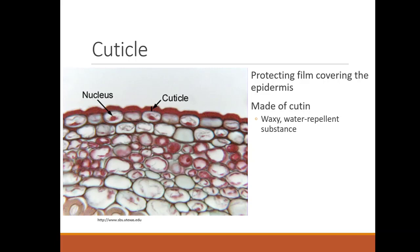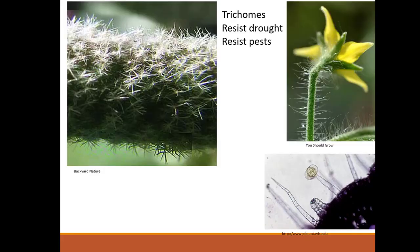The cuticle is on the outside of a stem — it's a protective film covering the epidermis. Leaves have this as well. It's made of cutin, and it's waxy and water repellent. Some things you might see on the outside of a stem are trichomes, which are hairs that can be very uncomfortable to touch. These help resist drought and resist pests.